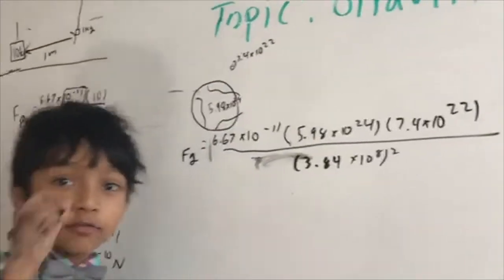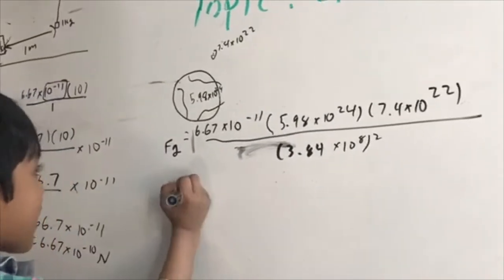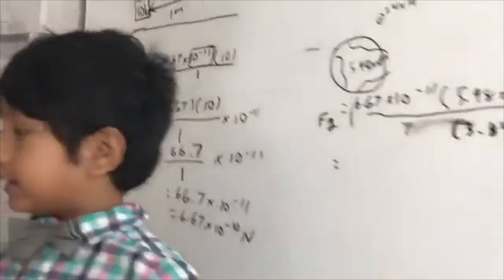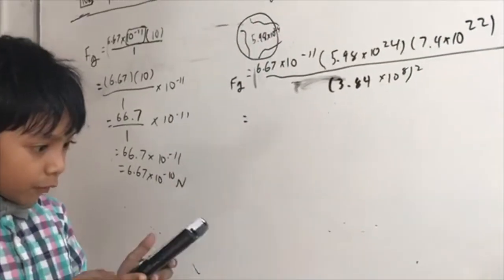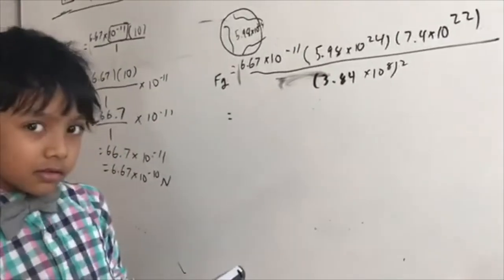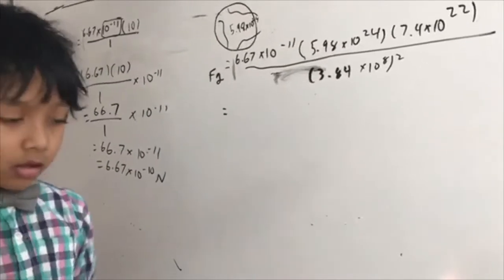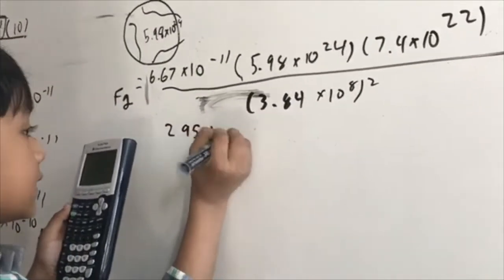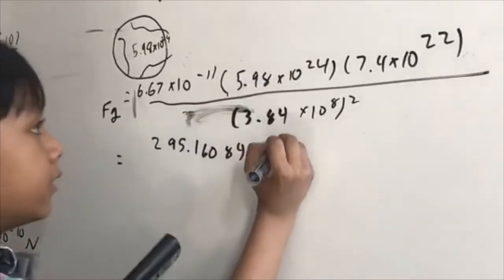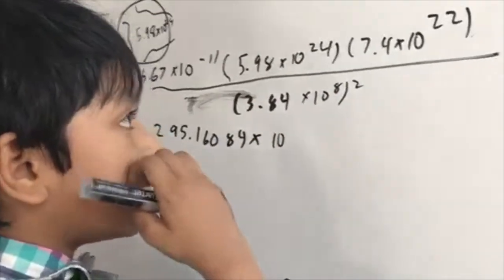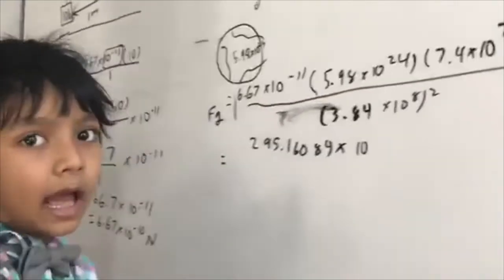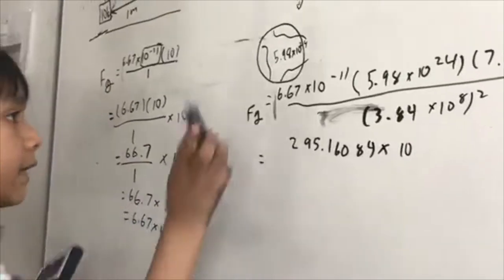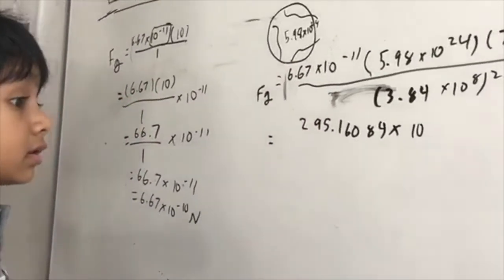Now, this one is trickier. Way trickier. So, pay attention. Gotta get myself a calculator. What we got at the top is 295.16084 times 10 raised to the negative 11 plus 24 plus 22. It's better if you add up the positive exponents first. So, this one becomes 46. And that, if you subtract by 11, will give you about 35.